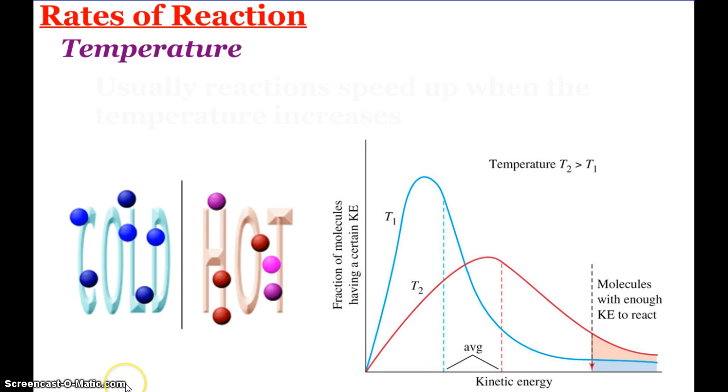Next up, we have temperature. Particles that are cold move slower. Particles that are hot move faster. It's a reflection of kinetic energy. Here you see our lovely graph that we've seen a couple different times. T2 is greater. Even though the hump is smaller, the average kinetic energy is higher than our lower temperature T1. But over here is where the important stuff is.